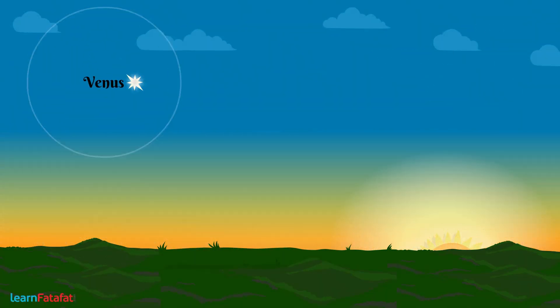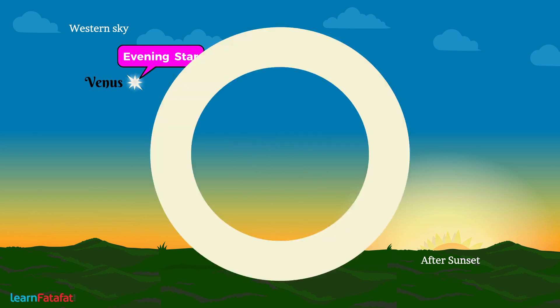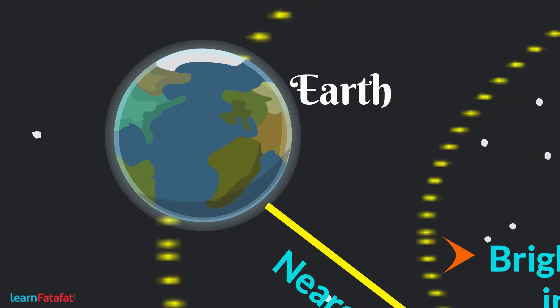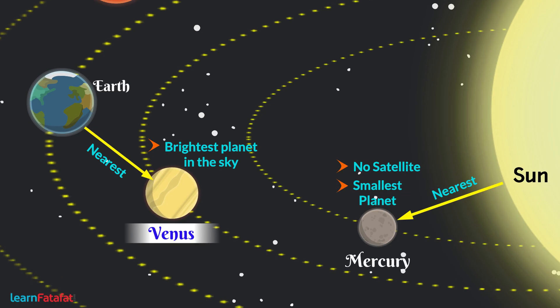Similarly, it also appears in the western sky just after sunset. Therefore, it is also called the evening star. It does not have any satellite. Venus rotates from east to west on its axis.